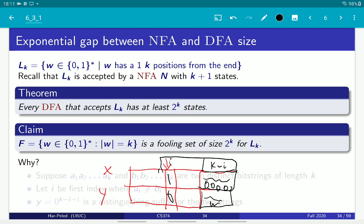which implies that indeed any DFA for this language needs 2 to the k states.